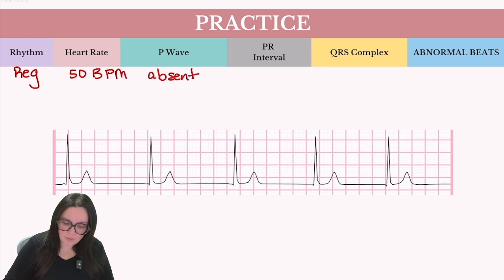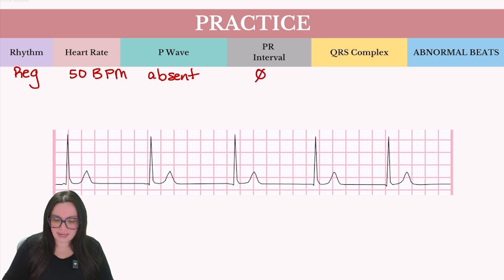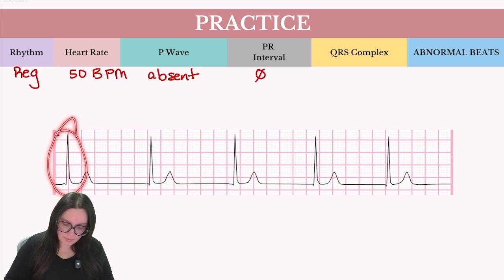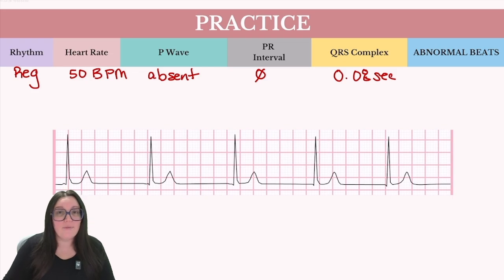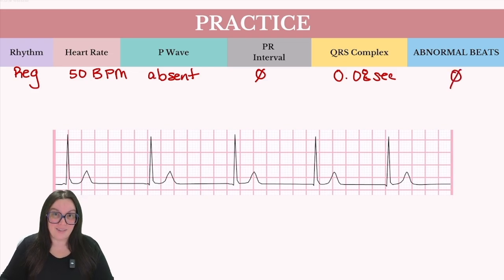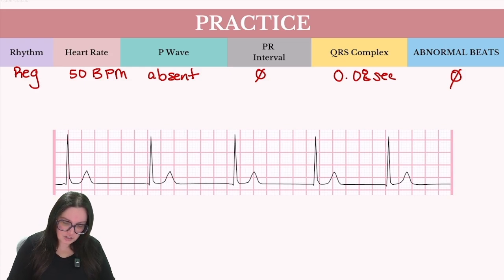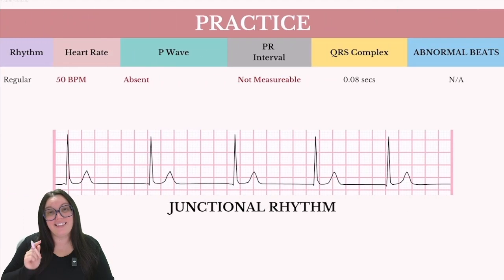So in this case, I'm going to say that our P wave is absent. Because we don't have any P waves, we don't have a PR interval — that is automatically eliminated. Looking at our QRS complexes, they do appear to be narrow and normal, approximately 0.08 seconds. And we have no abnormal beats. So based on the criteria — a slower heart rate and an absent P wave — we know that this rhythm is a junctional rhythm.